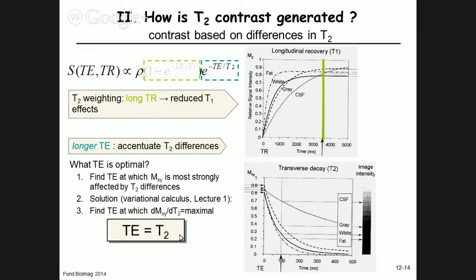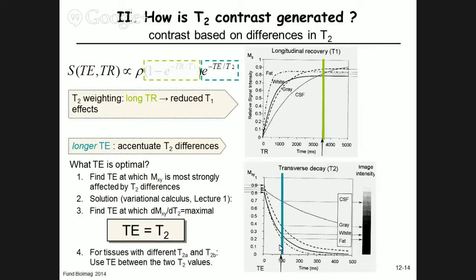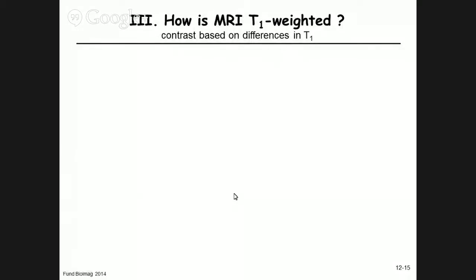If more than one T2 species is present — T2a and T2b — the optimal TE is somewhere between the two. As a rule of thumb, for the tissues in a typical brain scan, the optimal TE is around 100 ms. So a T2-weighted spin echo sequence uses TR = 3.5 seconds and TE = 100 ms.